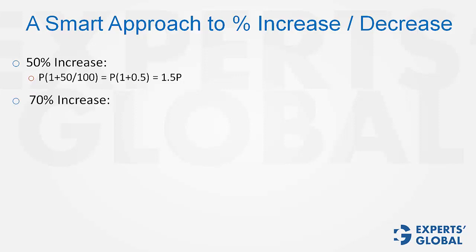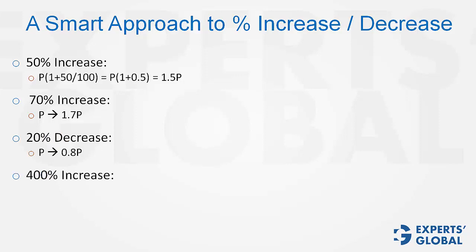70% increase: p becomes 1.7p. 20% decrease: p becomes 0.8p. 400% increase: 4p gets added to p, so it becomes 5p.